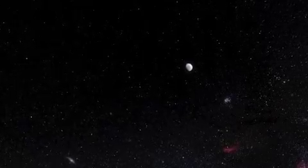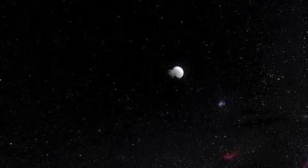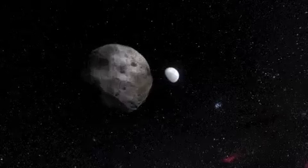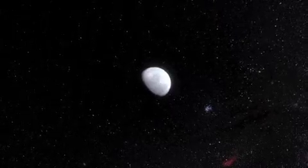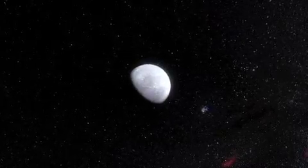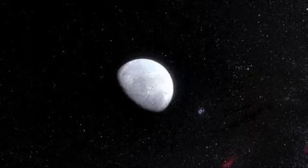Eris is three times farther from the Sun than Pluto at the moment and until now was believed to be about 25% bigger. But the new observations show that Eris is in fact almost exactly the same size as Pluto, with a diameter of around 2,330 kilometers.